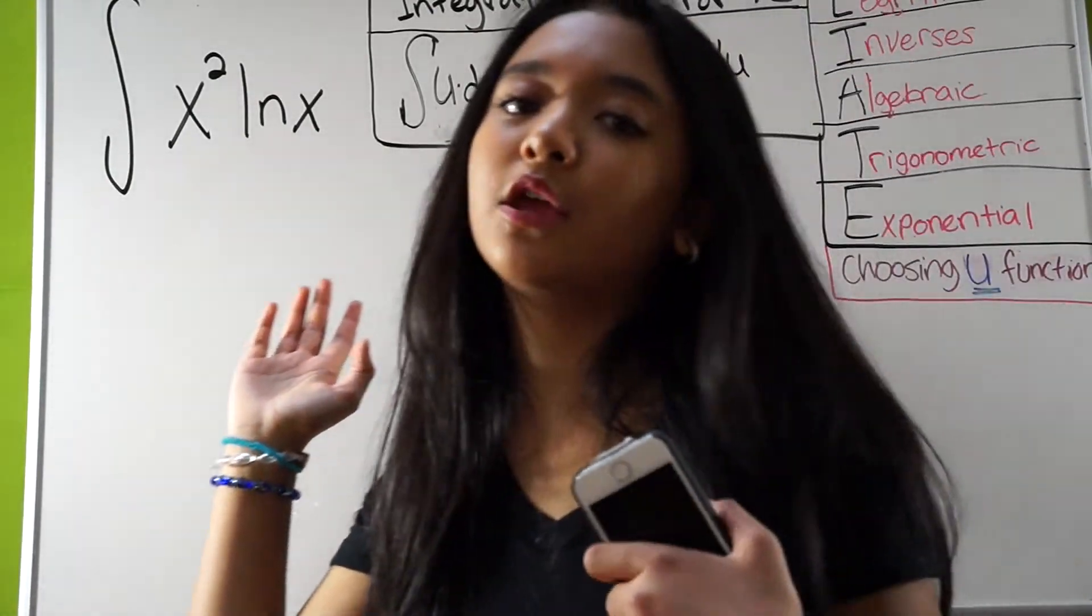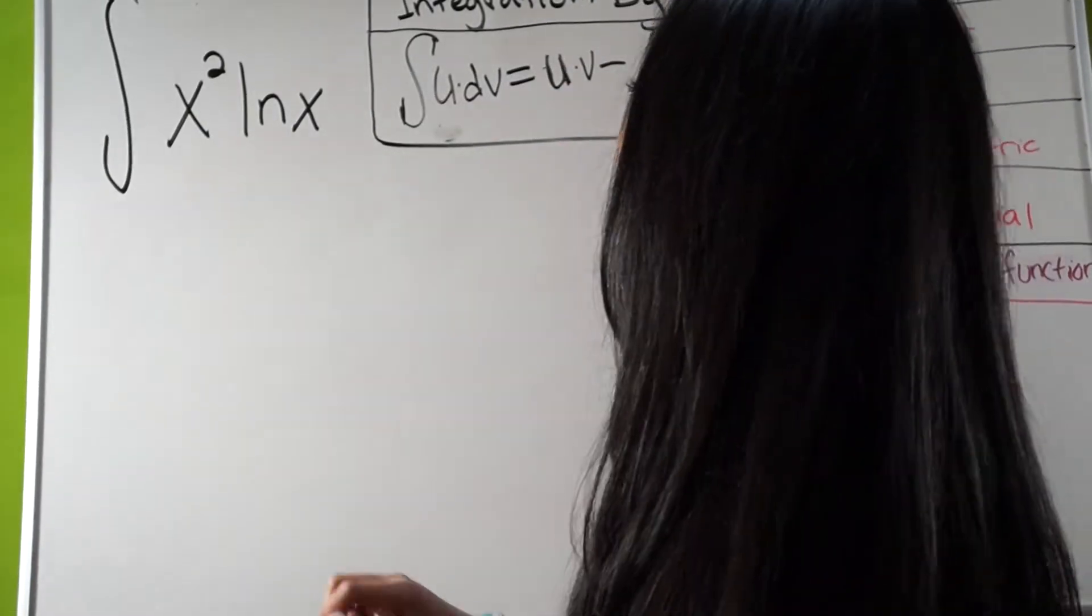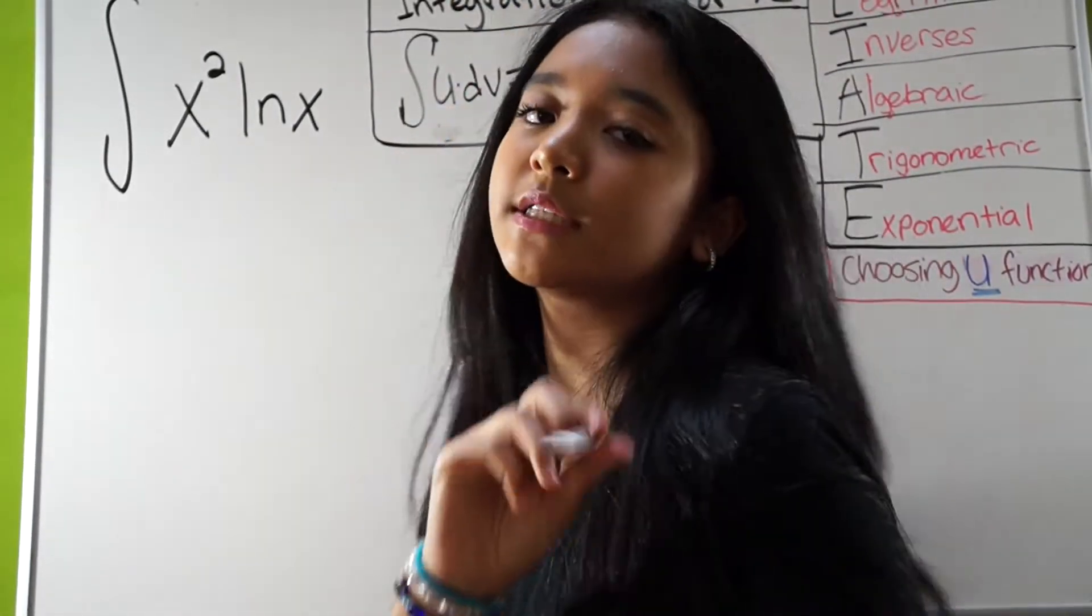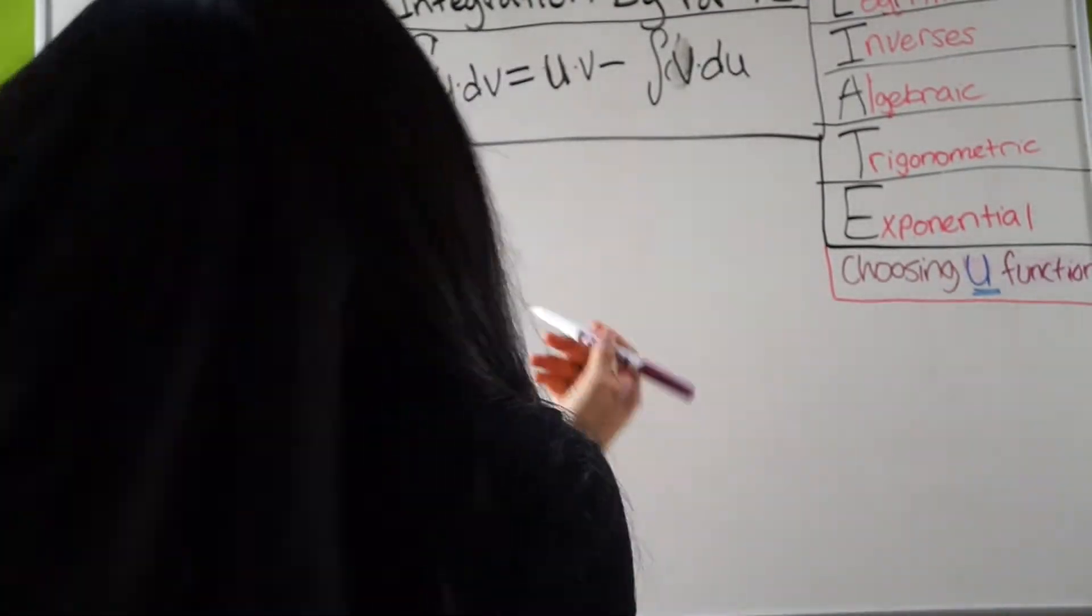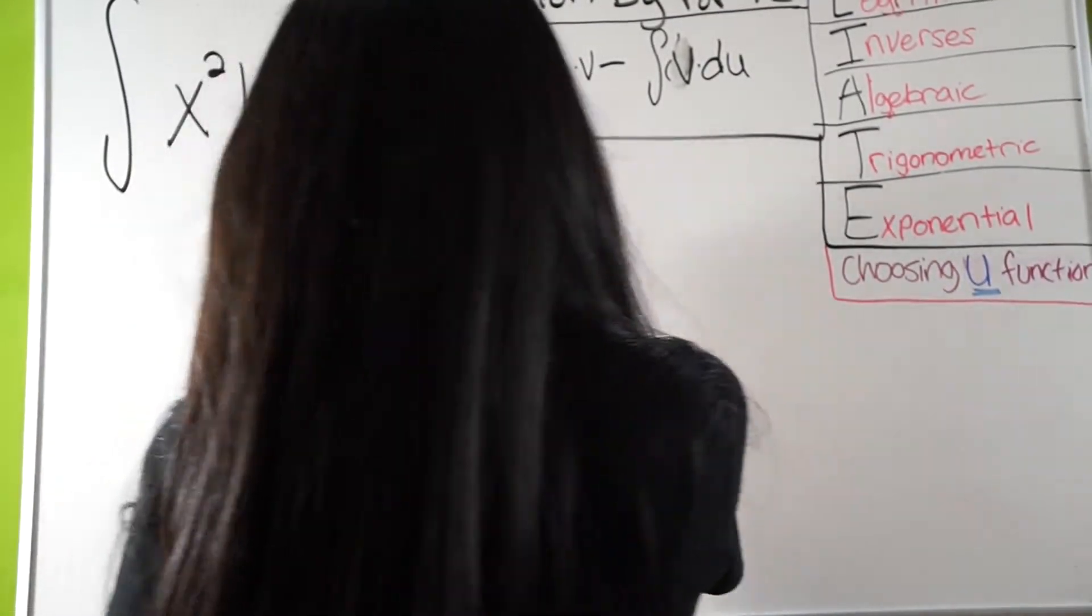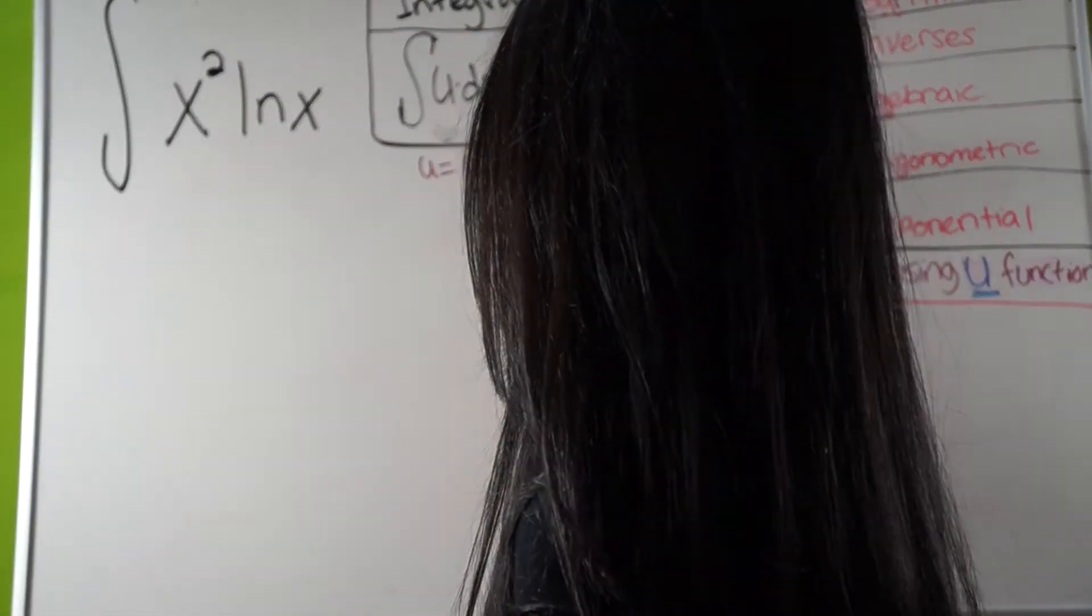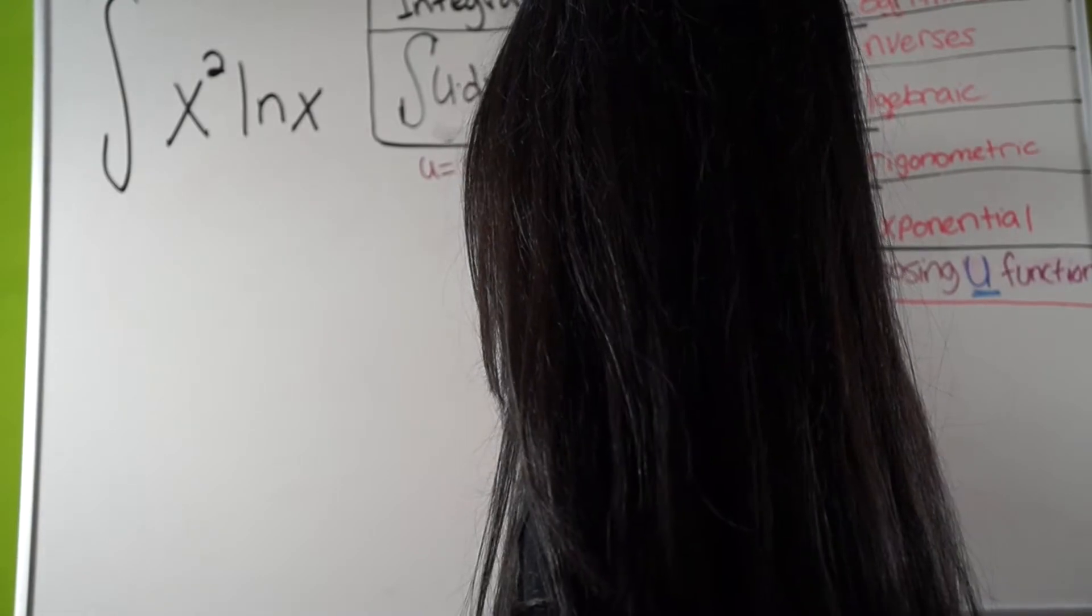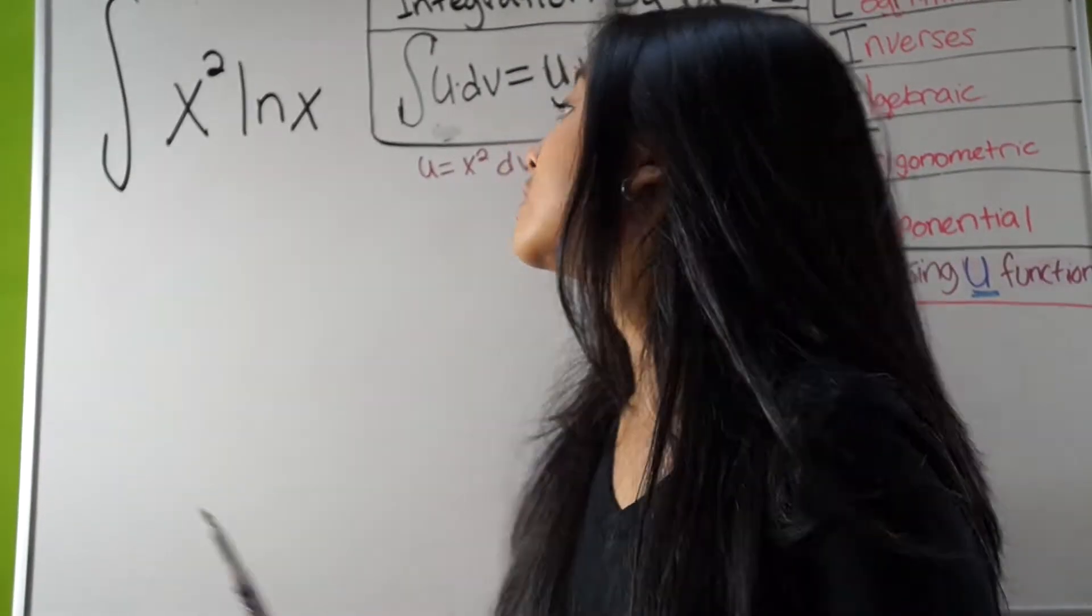Because automatically, you probably think, okay, your u, and this is a misconception. That's why we have this over here, liate, so you're saved. So, you have u, so you're going to think in your head, your u is going to be x squared, and your dv is going to be ln x. That's a misconception. No, it's not.